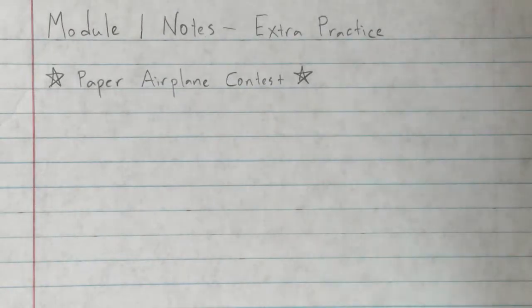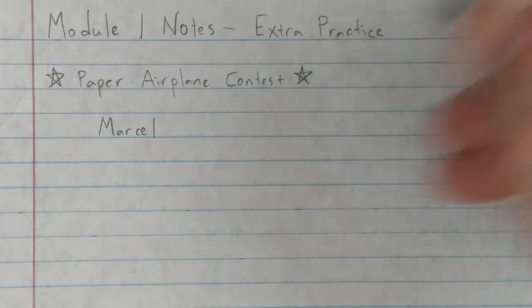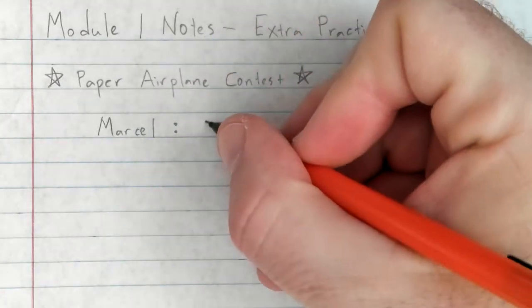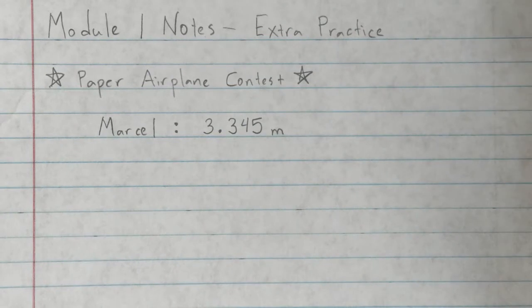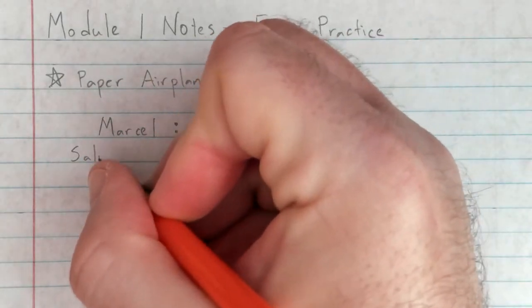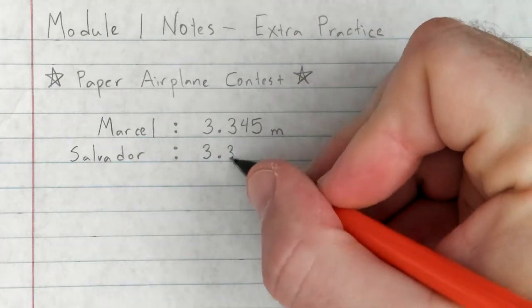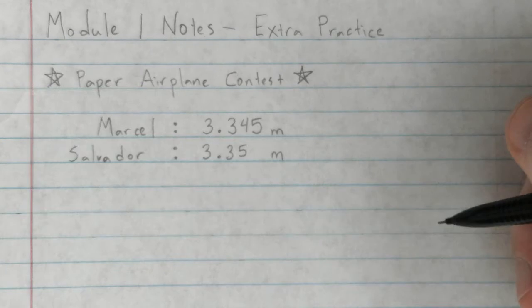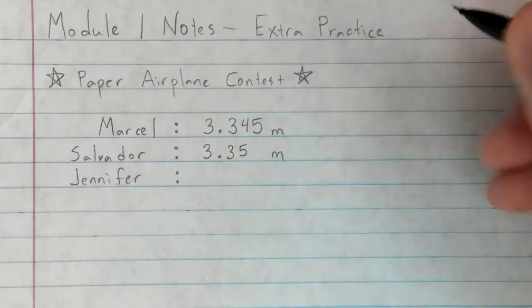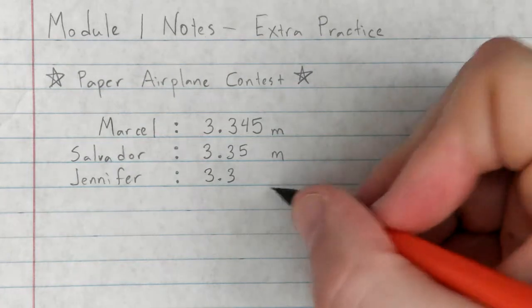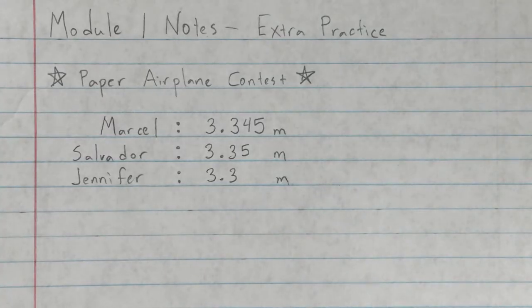Our first competitor, Marcel, throws their paper airplane three and three hundred forty-five thousandths of a meter. Our next competitor, Salvador, throws their paper airplane three and 35 hundredths of a meter. And finally, Jennifer throws their airplane three and three tenths meters.